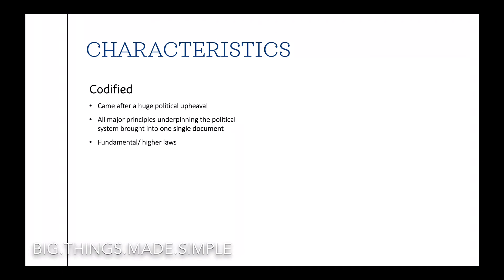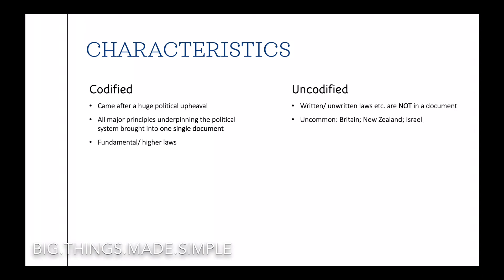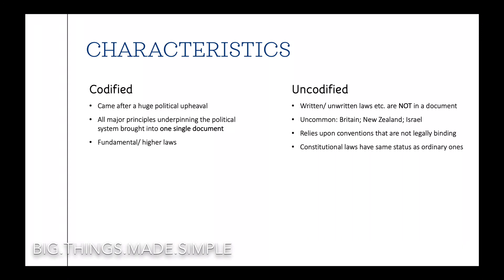Different to a codified constitution, there is an uncodified constitution. This is one feature of the UK constitution where many of the laws, rules and principles, whether written or unwritten, are not collected into one single document. This is a fairly uncommon feature which only Britain, New Zealand and Israel adopt. An uncodified constitution often relies upon conventions that are not even legally binding, and its constitutional laws enjoy the same status as ordinary ones, reflecting an absence of fundamental laws.